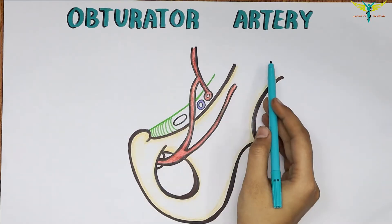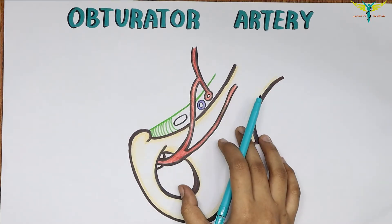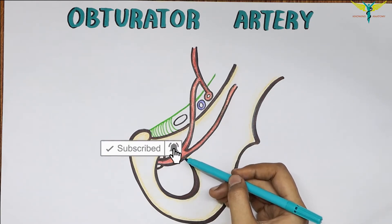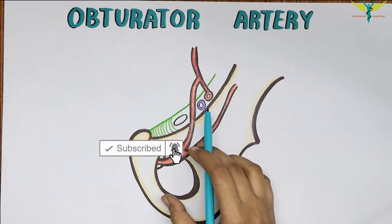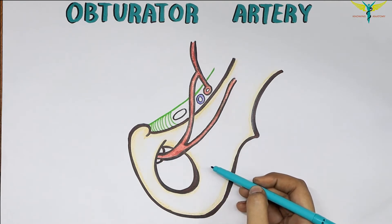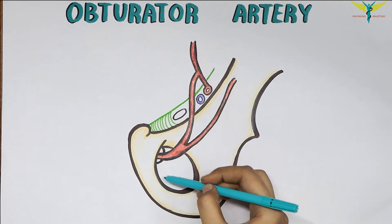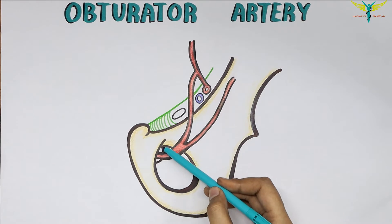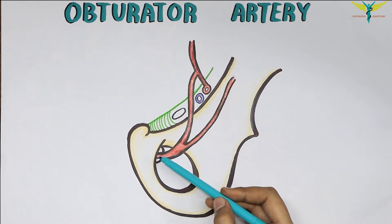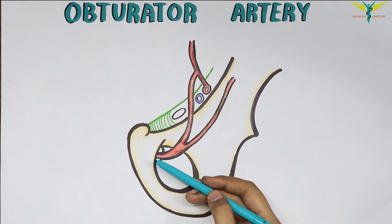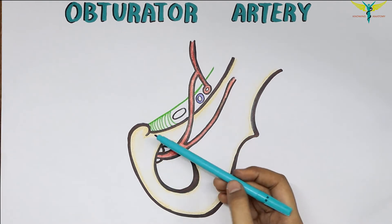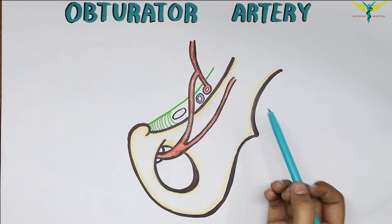The obturator artery arises from the anterior division of the internal iliac artery in the pelvis. It then enters the adductor compartment of the thigh through the obturator canal. Just outside the obturator canal, it divides into the medial and lateral branches, supplying the adductor compartment of the thigh.